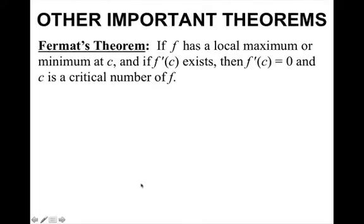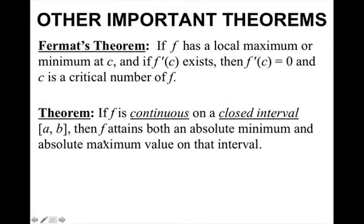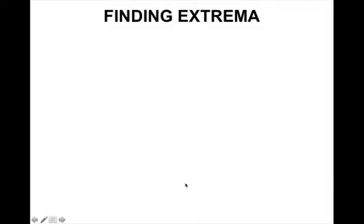Other important theorems include Fermat's theorem, which says that if f has a local maximum or minimum at c, and if the derivative exists, then the derivative equals 0 and c is a critical number of f. Another theorem says that if f is continuous on a closed interval from a to b, then f attains both an absolute minimum and an absolute maximum value on that interval. Using these theorems and knowing what critical numbers are, we're going to find the extrema of a function.